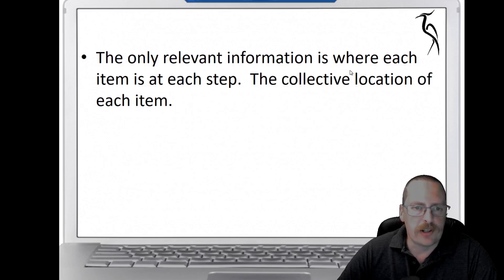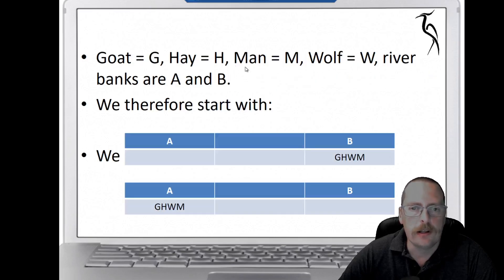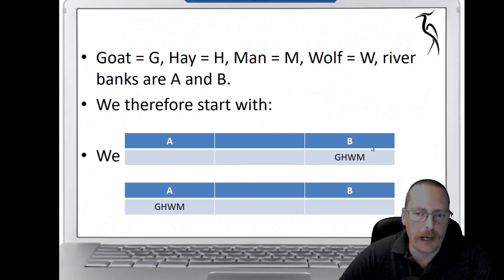The relevant information that we do need to keep is what item is stored at each stage of the processing, stage of the problem. We can do that by changing the items into letters. So the goat is G, the hay is H, the man is M, and the wolf is W. We've got riverbanks A and B, and we can represent it in a table like this. They all started with the goat, the hay, the wolf, and the man all over at bank B.